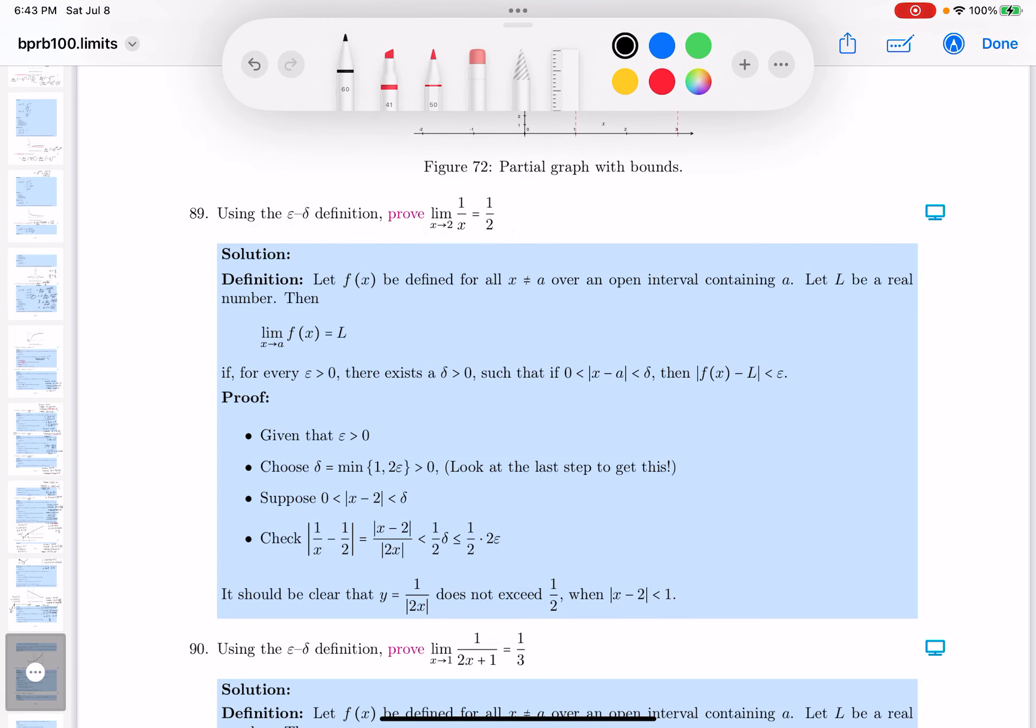All right, we've got a rational function now. Let's write it down, a given. Epsilon greater than zero. Choose, no idea. That's the tough part in the problem, by the way.